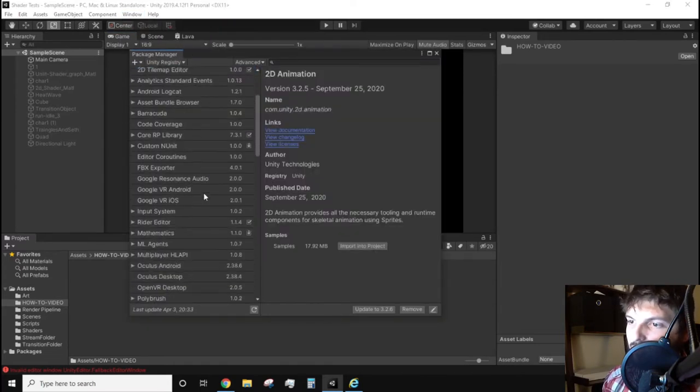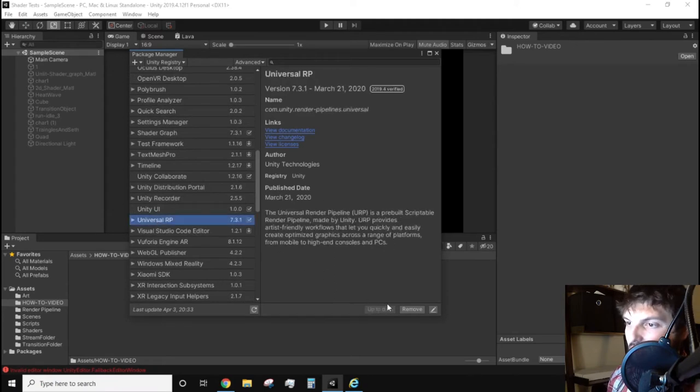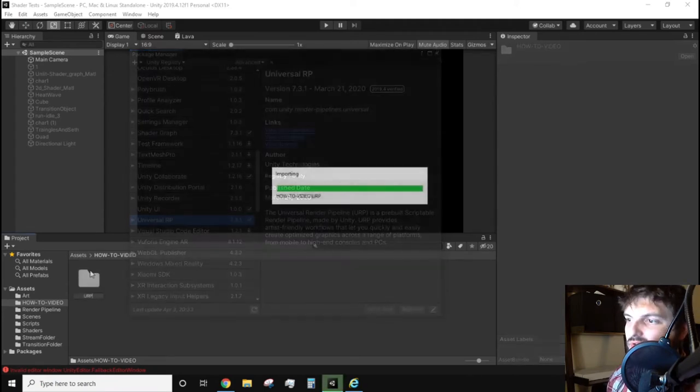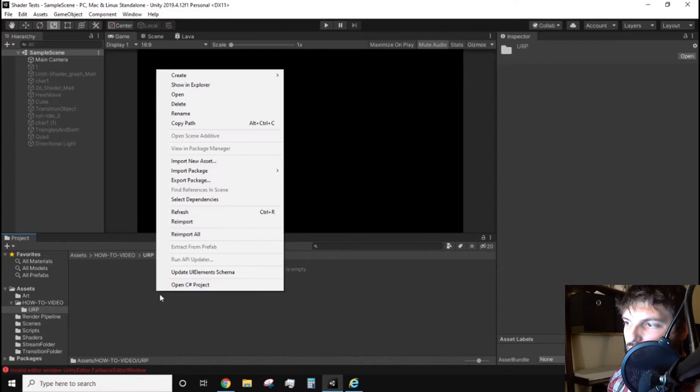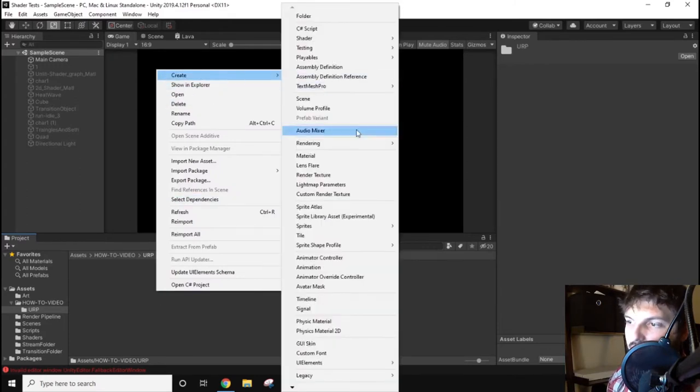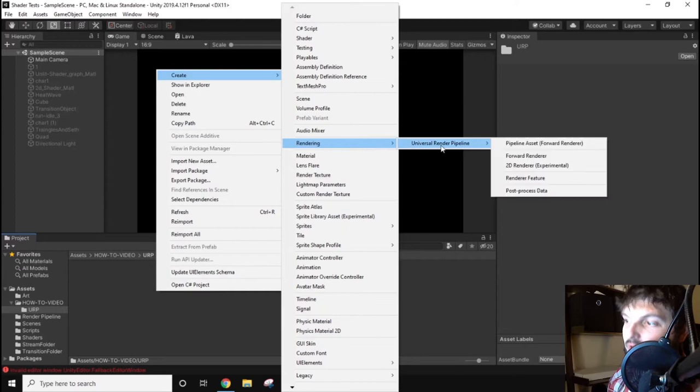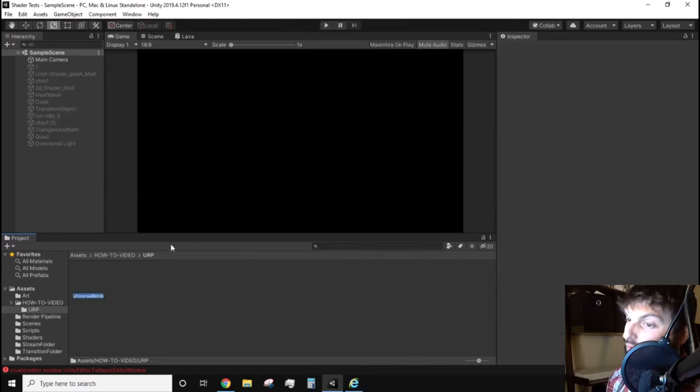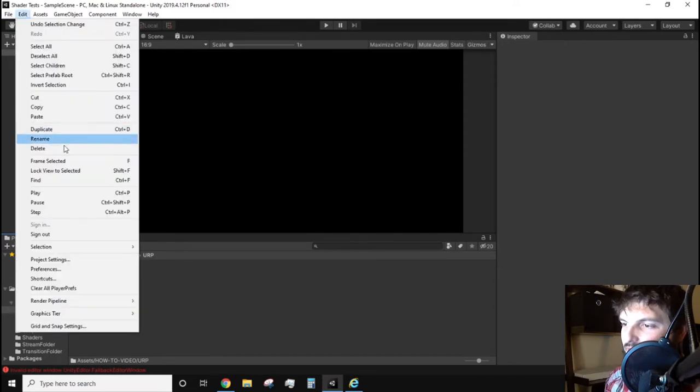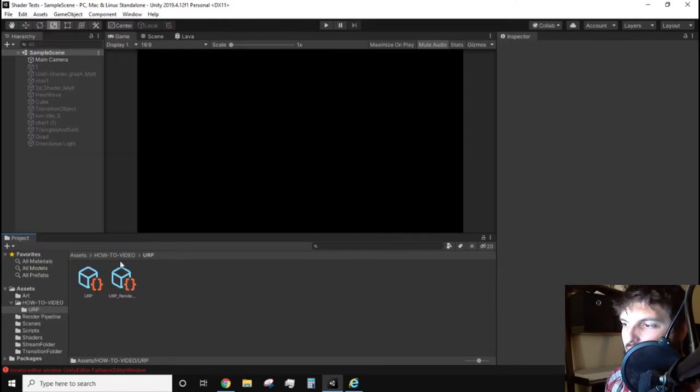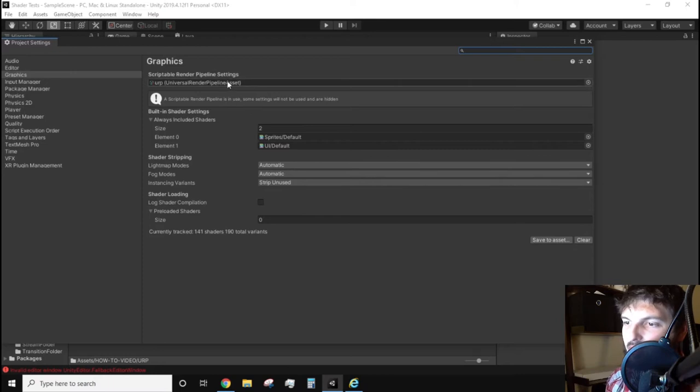I'll be using the URP or universal render pipeline in my example. Now that you have the pipeline installed you'll need to create the renderer asset which can be done by right clicking create rendering universal pipeline renderer pipeline asset the forward renderer. This could also work in the 2d experimental renderer asset but I'll be using the standard forward renderer. If the project is using the correct renderer go to the edit project settings graphics tab then drag and drop or select from the menu the renderer pipeline asset into the pipeline asset slot.